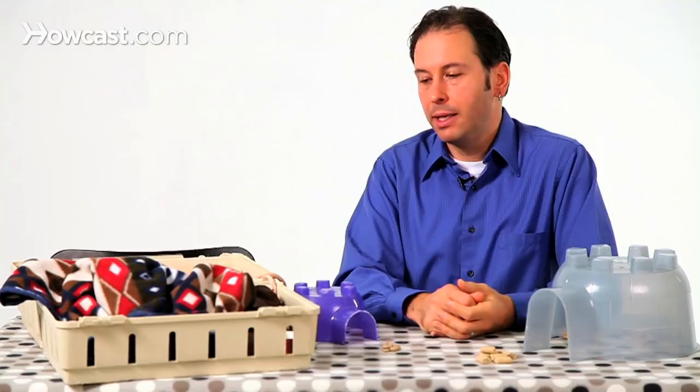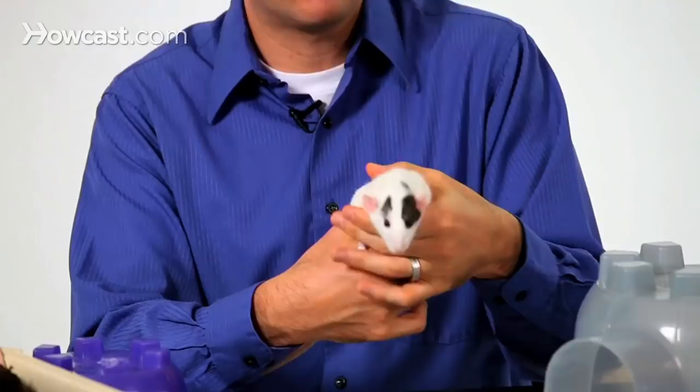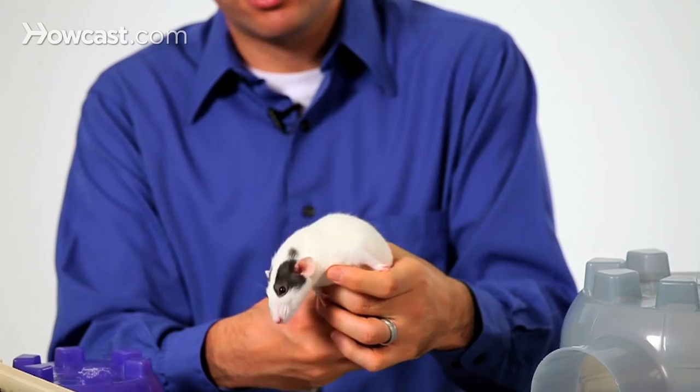Some of the varieties that rats come in include hairless rats, the ones that have no fur on their bodies. One of the other varieties is the Dumbo rat, like you see here, named for their large, wide-set ears.